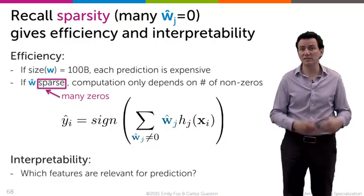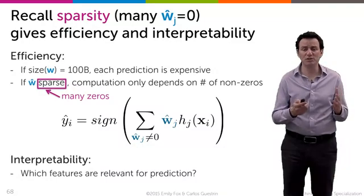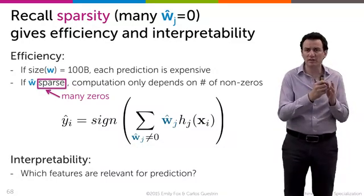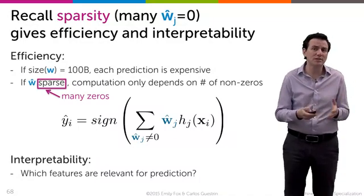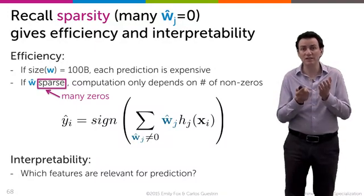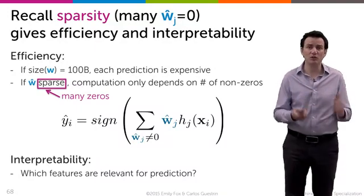The other impact that sparsity has, having many coefficients being zero, is that it can help you interpret the non-zero coefficients. You can look at the small number of non-zero coefficients and try to make an interpretation. Oh, this is why a prediction gets made. Such interpretations can be useful in practice in many ways.